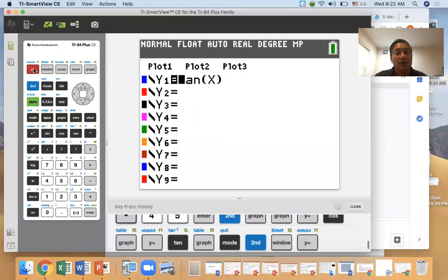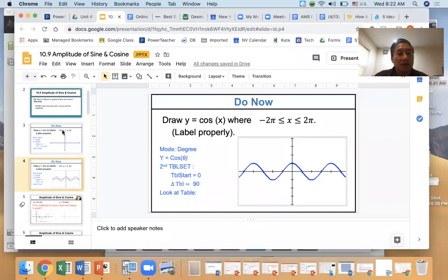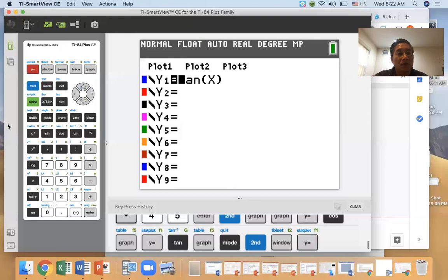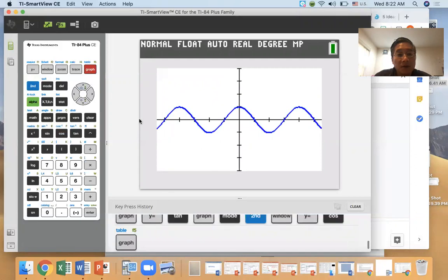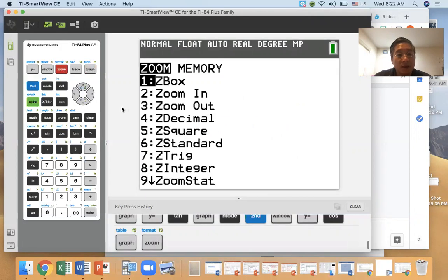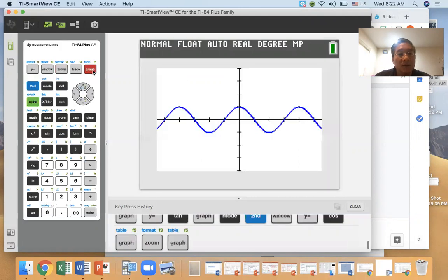And then go to the function. Which function do we draw? It was cosine, right? So I'm going to draw the cosine. Okay, so cosine is here. And then look at the graph. If you see the graph is flat, then what should you do? You go to zoom and then ZoomTrig (Z7), right? If you do this, then you will see this kind of graph.